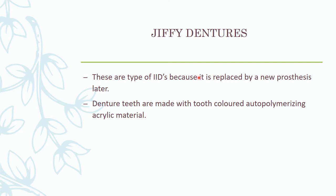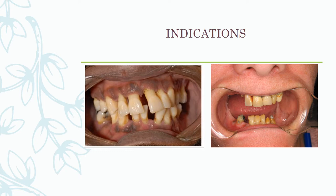The jiffy denture is basically the same as an immediate denture except that the denture teeth are made with tooth-colored autopolymerizing acrylic. It is not done very frequently now; it used to be done before. The indications include mutilated teeth that cannot be rehabilitated, teeth with hopeless prognosis, those that cannot be periodontally treated, grade three mobility, loss of occlusal plane, and too much attachment loss.